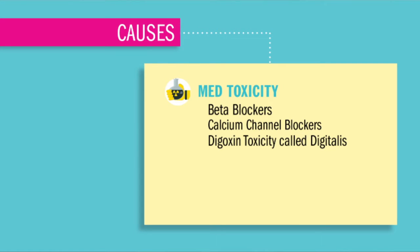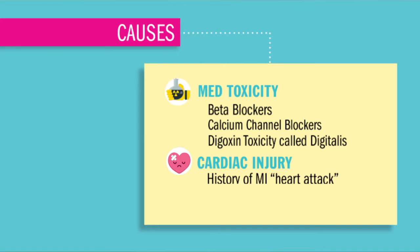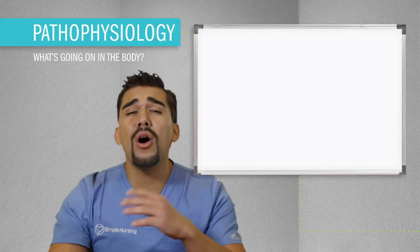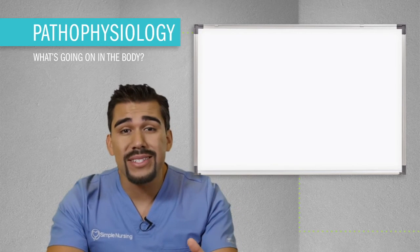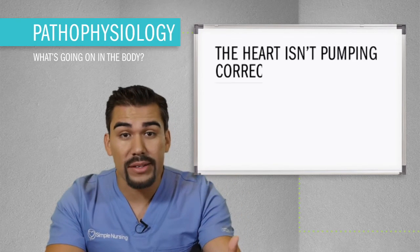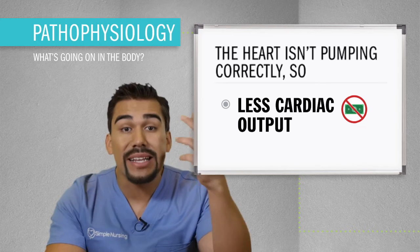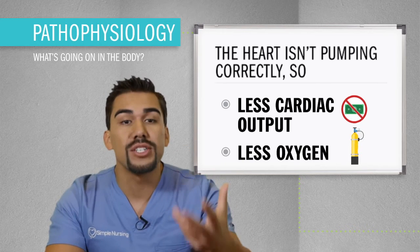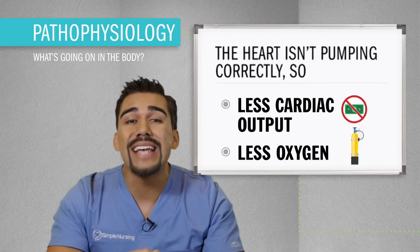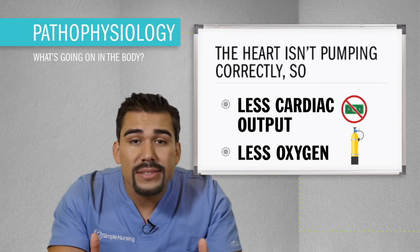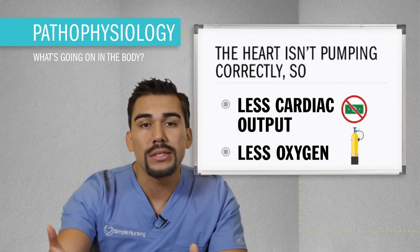One of the last major causes is a history of an MI, or basically a heart attack. This causes tissue death and ineffective pump, basically leading to less oxygen to the body. Just like nearly all other ugly cardiac dysrhythmias, the heart isn't pumping correctly — less cardiac output, less oxygen. Symptoms will look exactly like all the other heart blocks, but a lot worse with complete block.